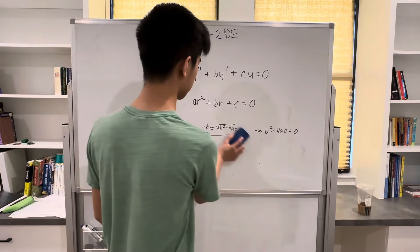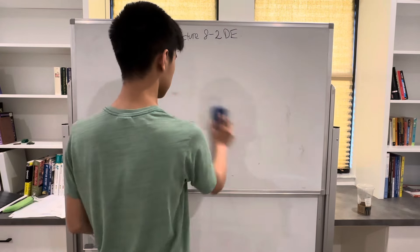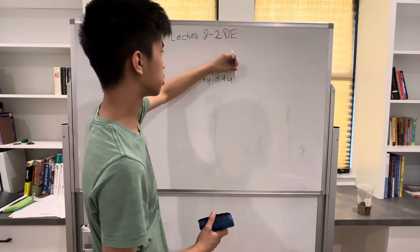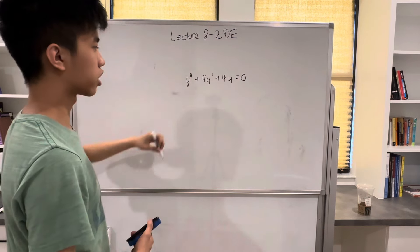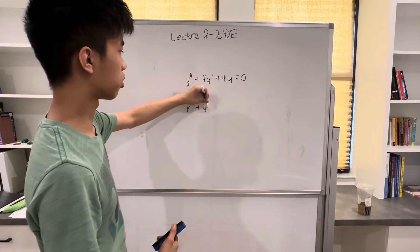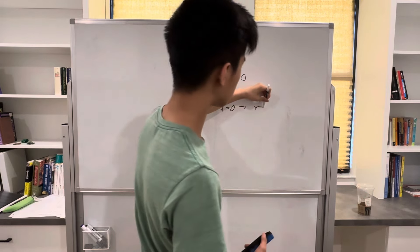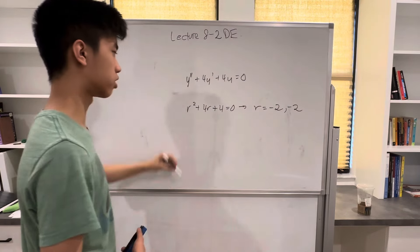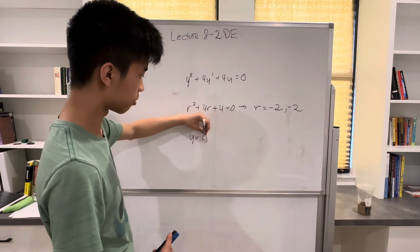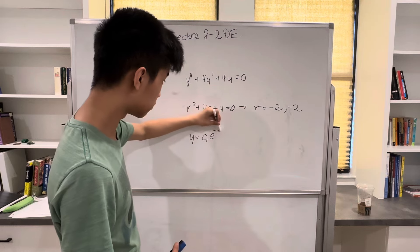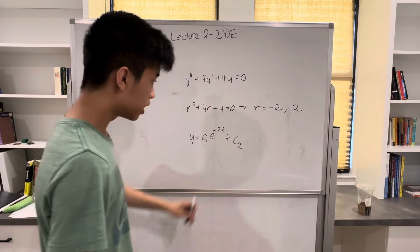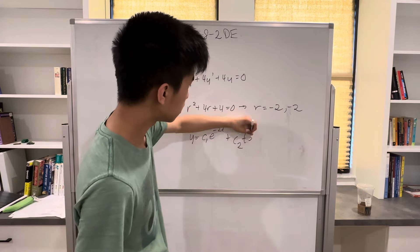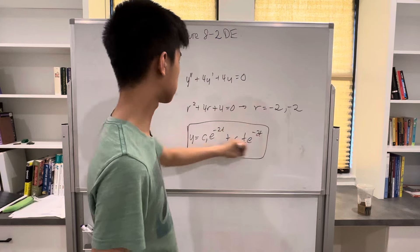Let's cover an example. Say we have y'' + 4y' + 4y = 0. Then our characteristic equation is r² + 4r + 4 = 0, so r is going to be a repeated root of negative 2. Our solution is y = c₁e^(-2t) + c₂te^(-2t). That's our solution.